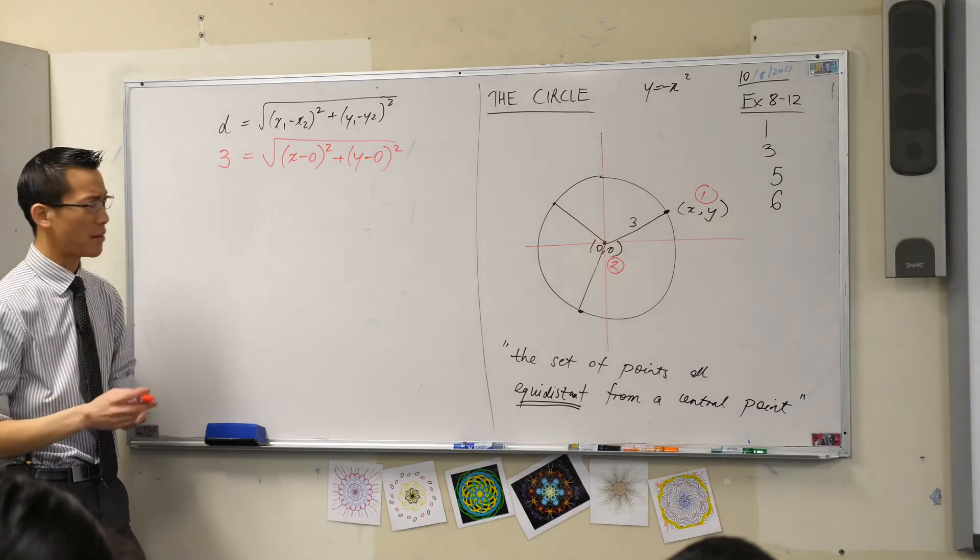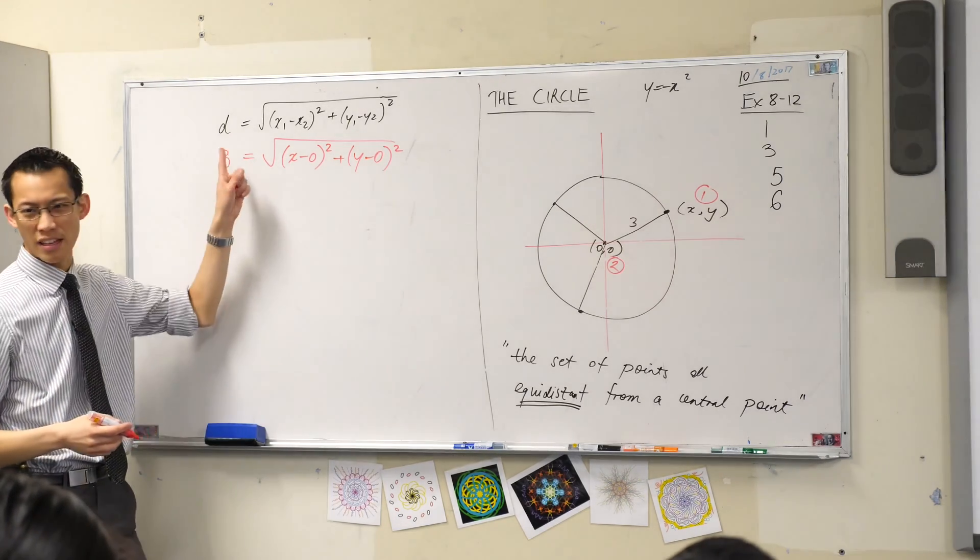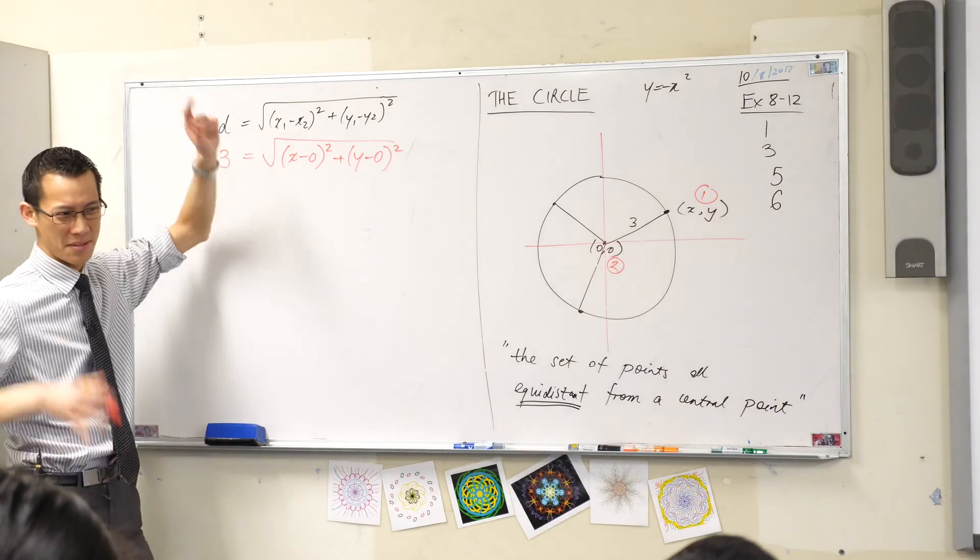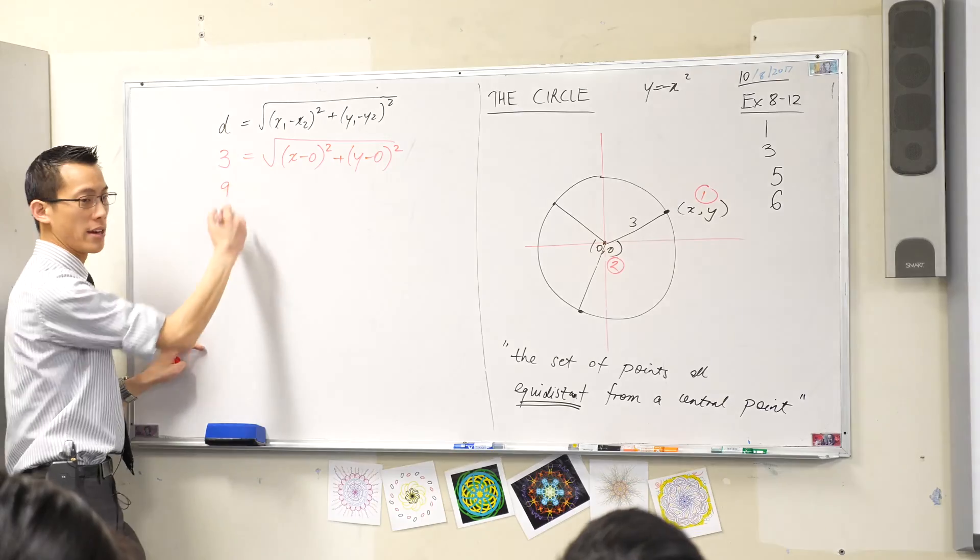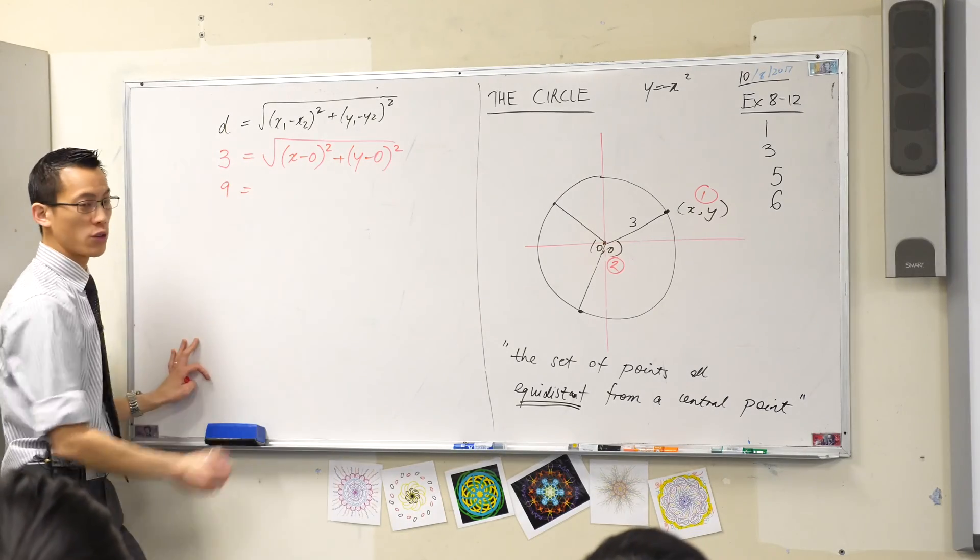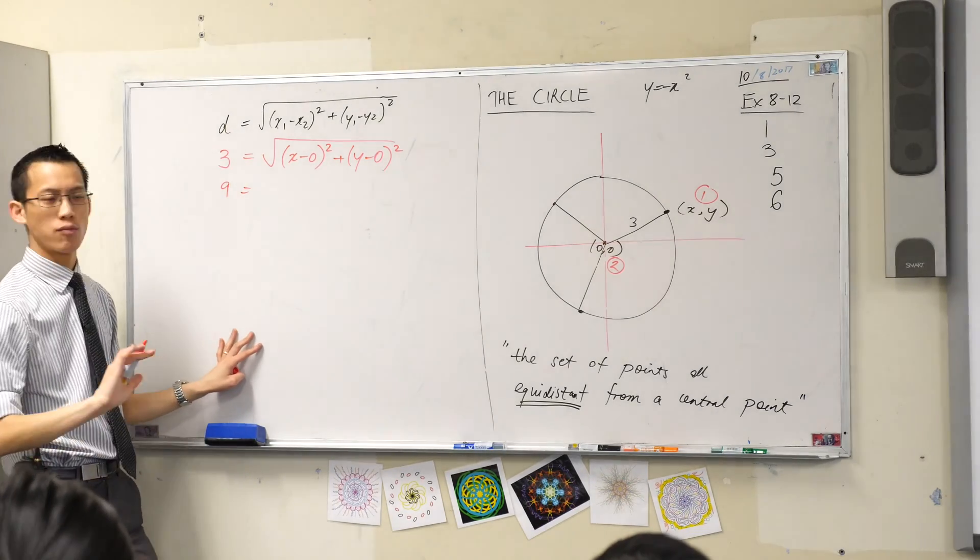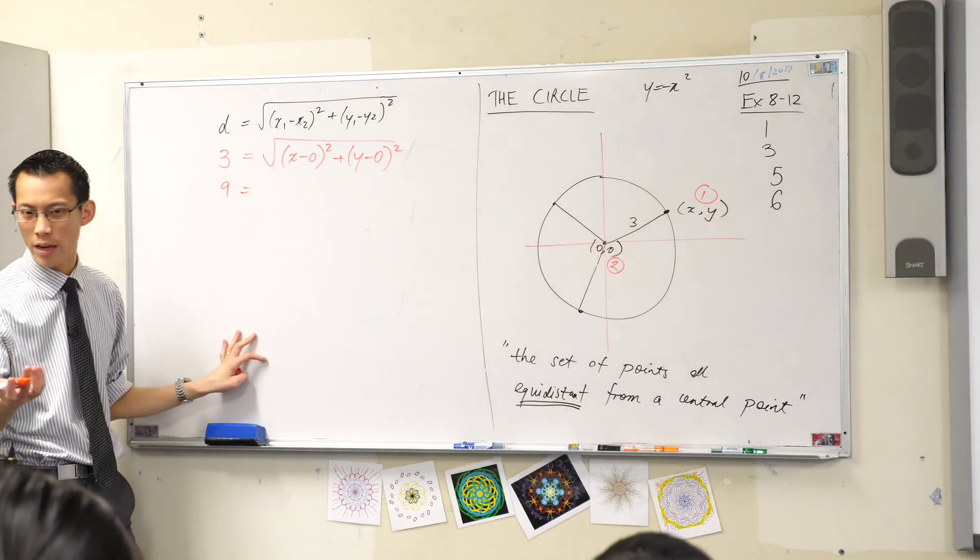I could simplify this a lot. The first thing I'm going to do is—I don't like this square root sign, it's a pain to draw every time. So I'm going to square both sides. I'm going to say nine over here, and on the right-hand side, I don't have to write the square root sign anymore because I squared it.